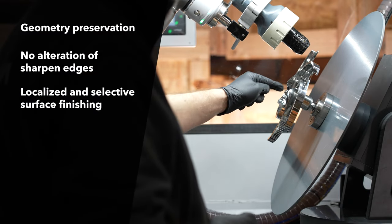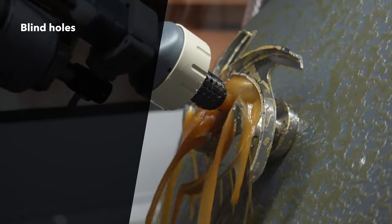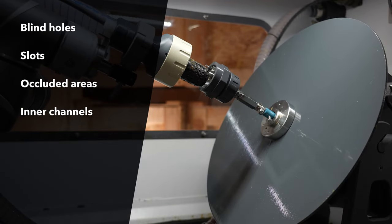D-Lite E-Blast is specifically designed for processing blind holes, slots, occluded areas, and inner channels.